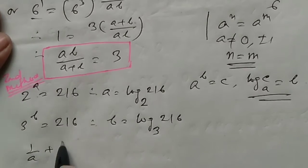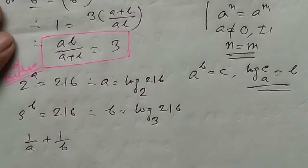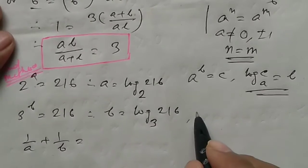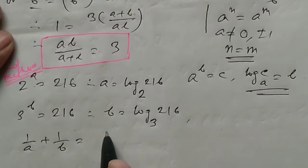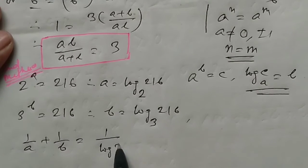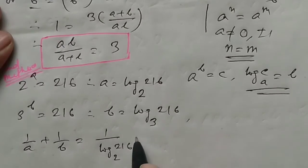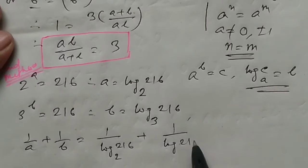Now compute 1 by A plus 1 by B, which equals 1 by log 216 to the base 2 plus 1 by log 216 to the base 3.